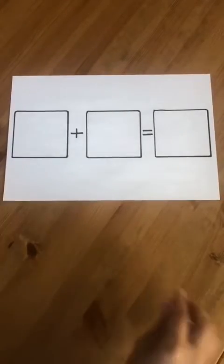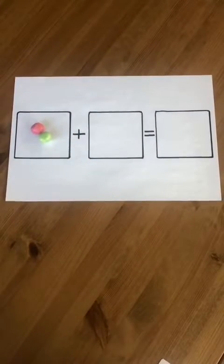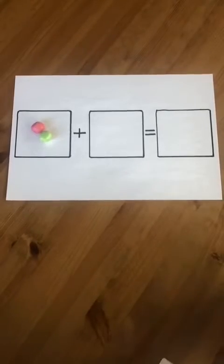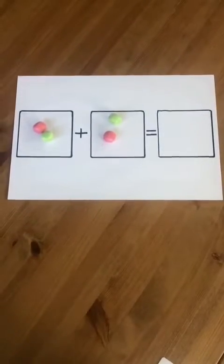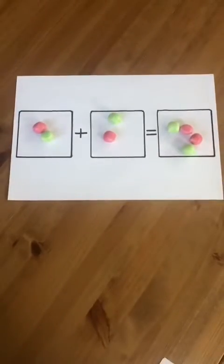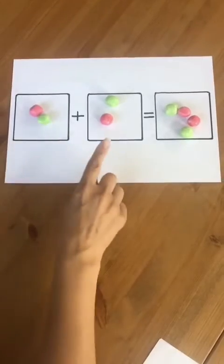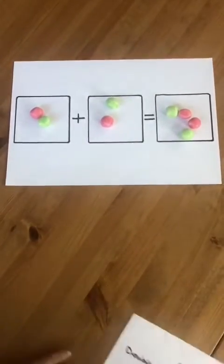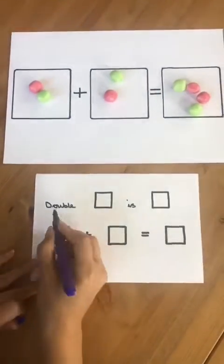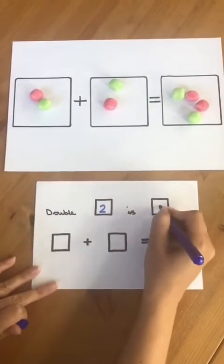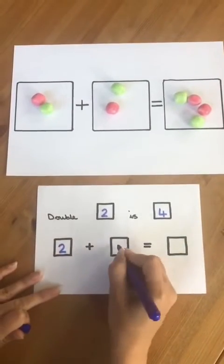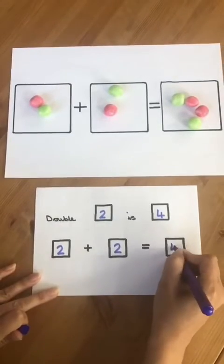I have two sweets, but what if I wanted to double that? I would need to add two more. How many do I have altogether? One, two, three, four. When we double a number, we add each of them together. We can say double two is four. Double two is four because two plus two equals four.